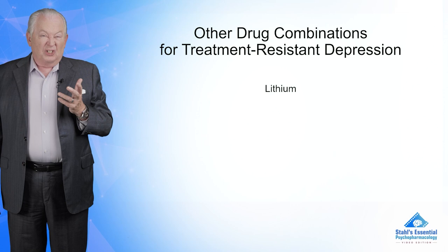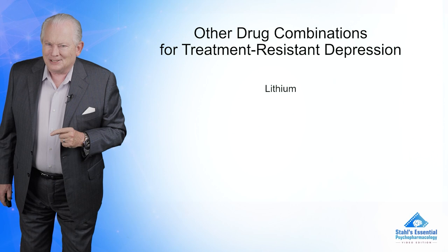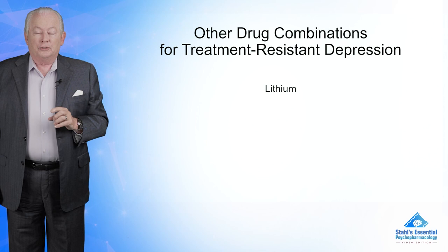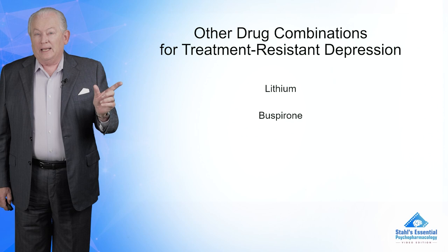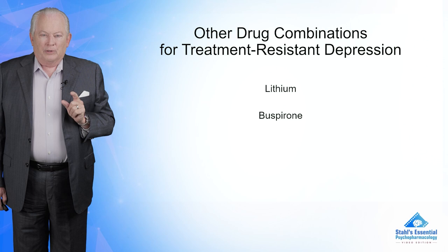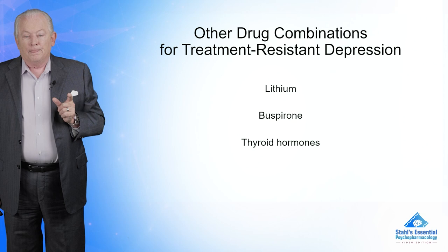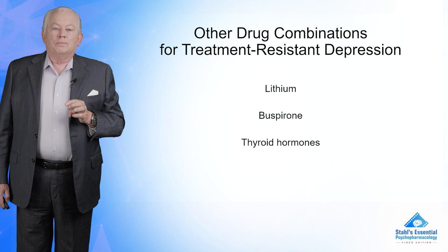You can augment with some somewhat old-fashioned things that were around when I was in training in my residency last century. You can add lithium even to unipolar depression onto a monoamine reuptake blocker, you can add the 5-HT1A agent known as buspirone to a monoamine reuptake blocker, and you can even add thyroid T3 or T4 — often T3. These can all help; they're kind of falling out of fashion today but they're worth trying when a lot of other things haven't worked.